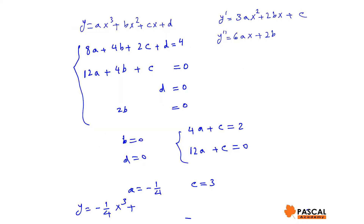The second derivative of the function when X is 0 is also 0. The first derivative of the function is 3AX² plus 2BX plus C, and the second derivative is 6AX plus 2B. We set up the equations: when X is 2, Y is 4 (first equation); when X is 0, Y is 0 (third equation); when X is 0, the derivative is 0 and the second derivative is 0.